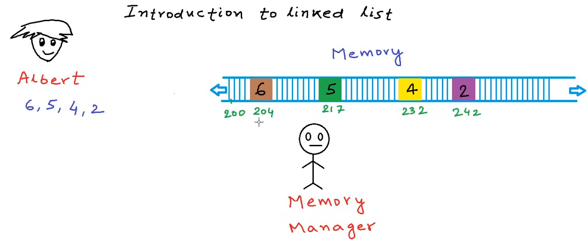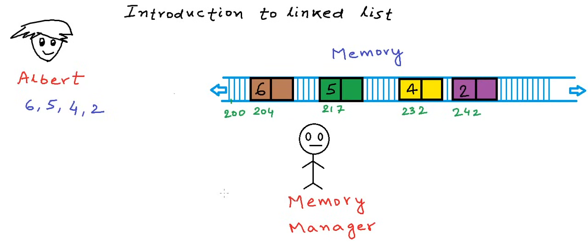We need to store extra information to link these blocks together. We need to know which block is first and which is second in the list. With an array it was simple — we had one contiguous block, so we knew where a particular element was by calculating its address using the starting address and the position. But here, we need to link the blocks and store the information about ordering. What we can do is store extra information with each block: have two parts in each block — one part stores the data or value, and the other part stores the address of the next block.